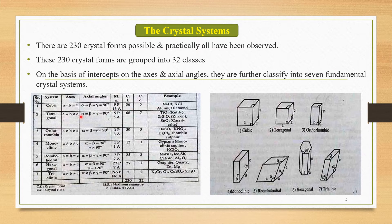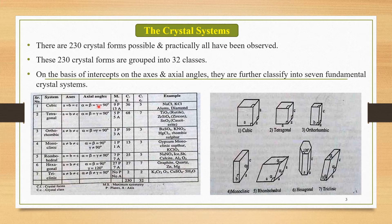The seven fundamental crystal systems are: the cubic system, tetragonal system, orthorhombic system, monoclinic system, rhombohedral system, hexagonal system, and triclinic system. Each of these seven fundamental systems has fixed intercept ratios on axes, fixed axial angles, and fixed values of maximum symmetry, crystal forms, and crystal class.